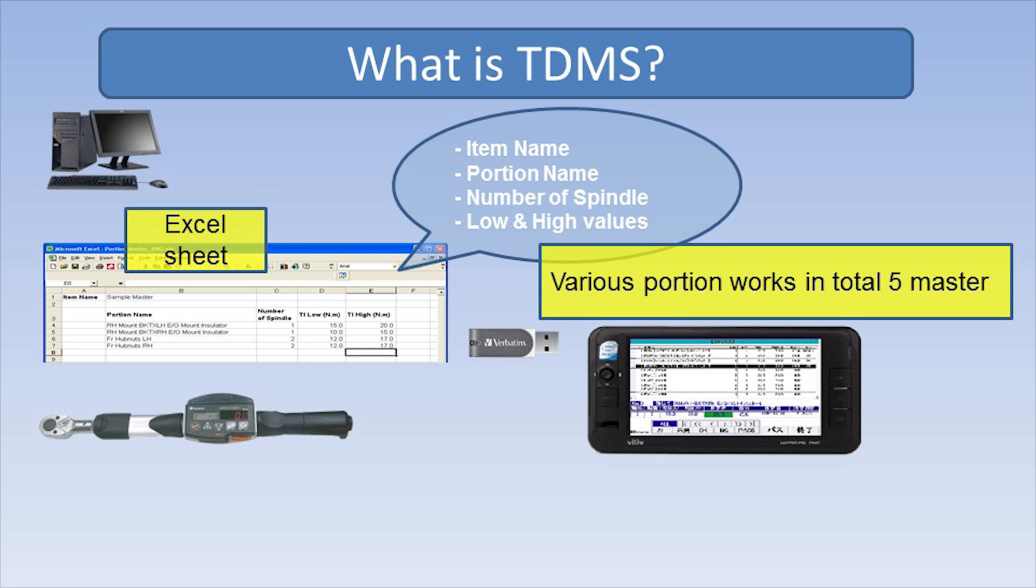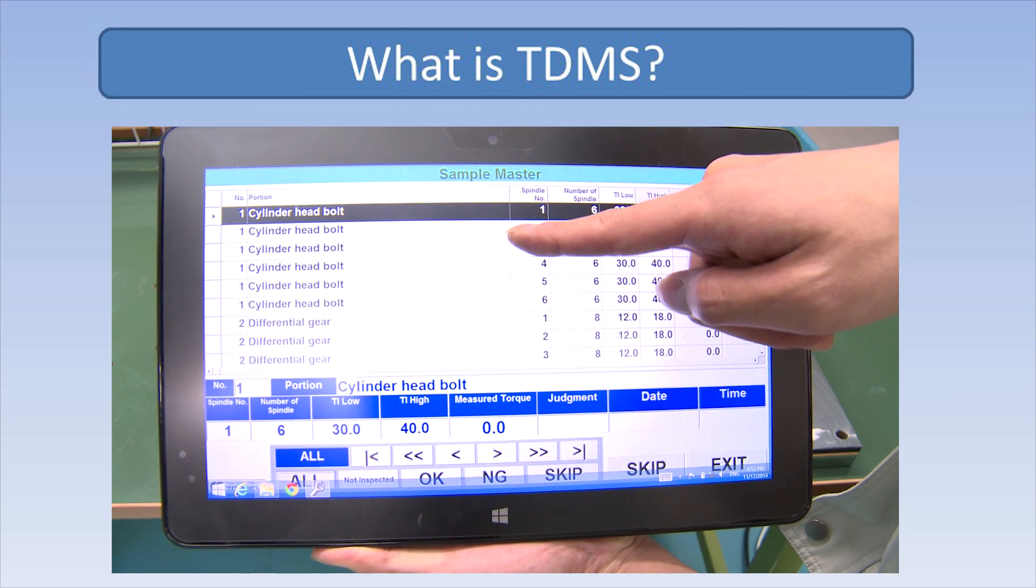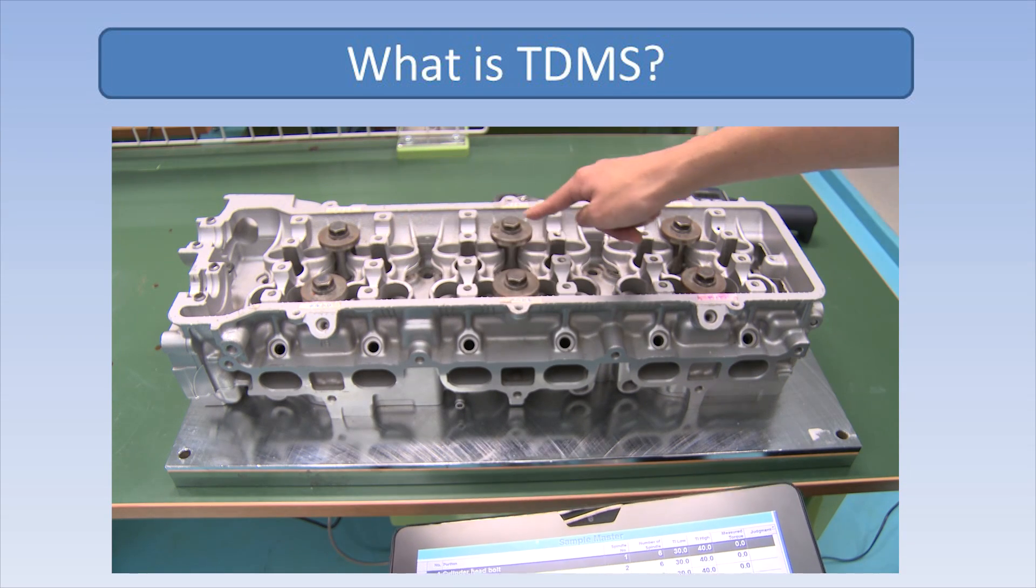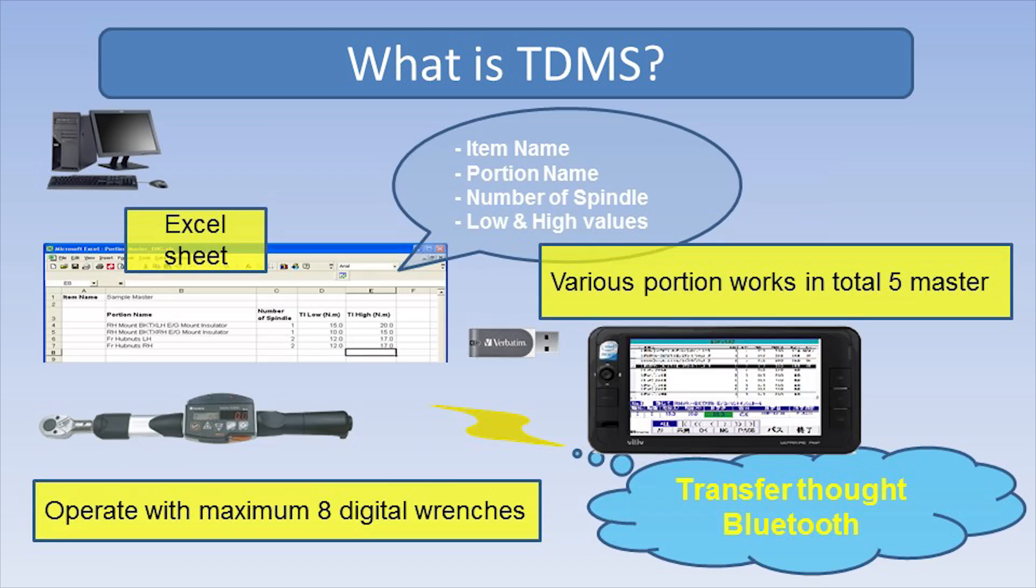On the portable device, the operator can confirm the details for each work process. Perform each operation by following the instructions of TDMS. Recommended usage with Tonichi's Bluetooth-enabled digital torque wrenches for wireless connectivity and optimal movement.